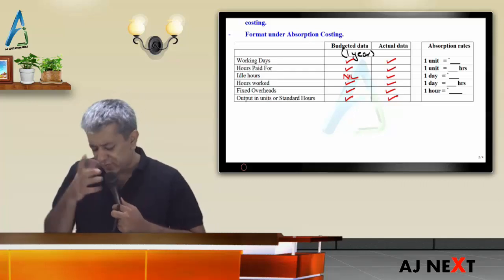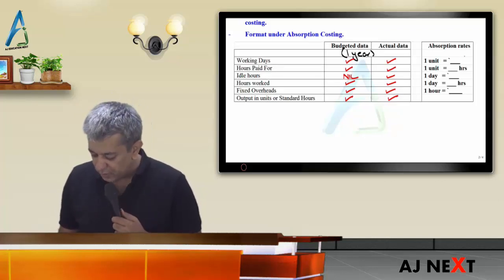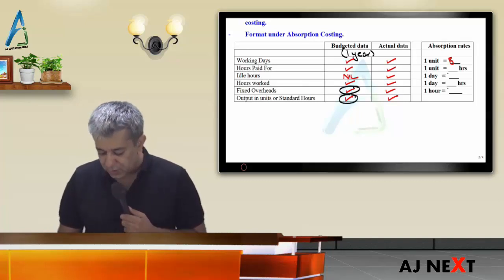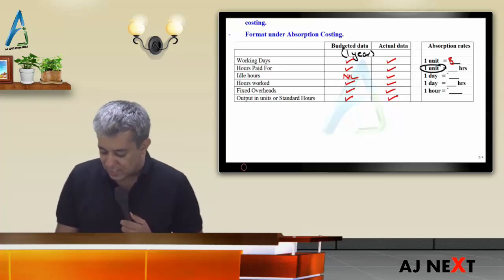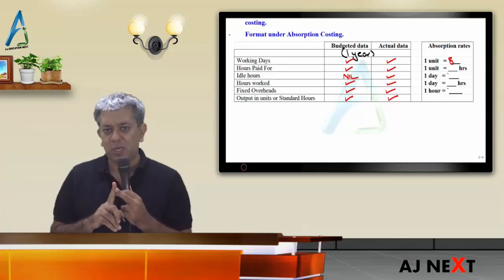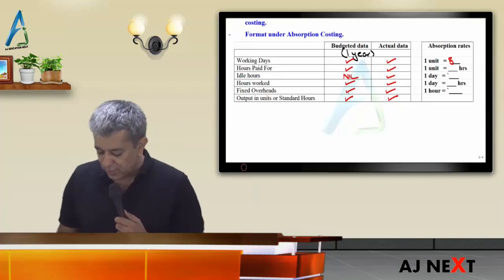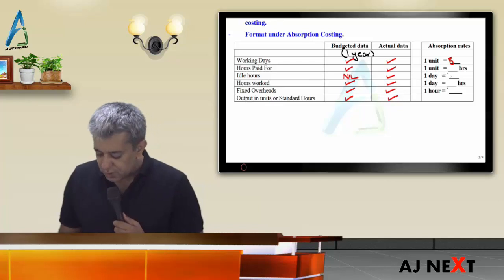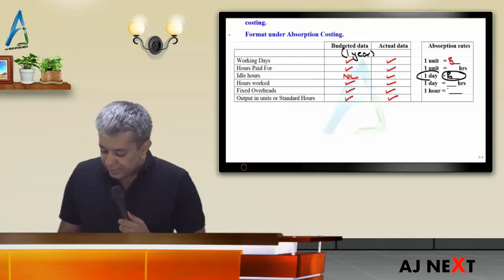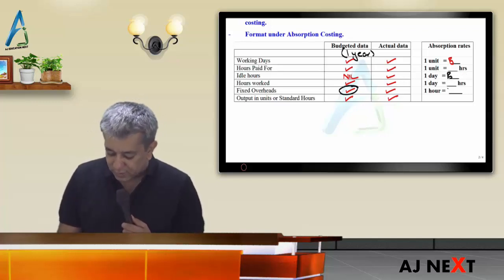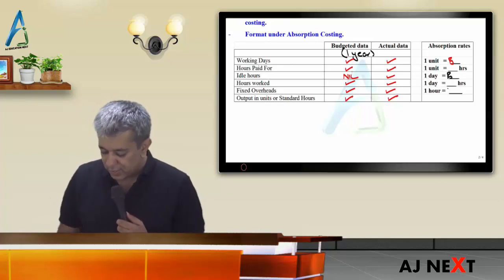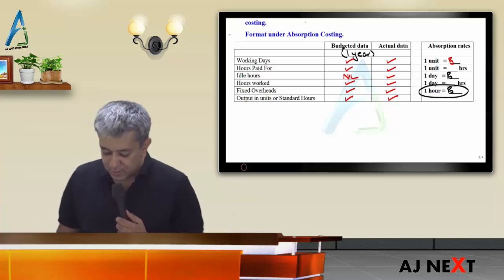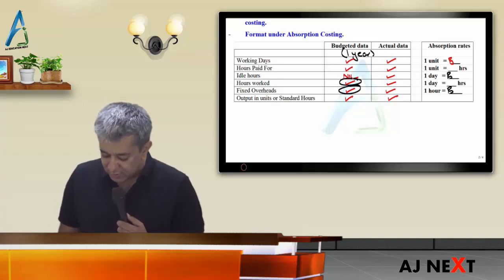You will need at most five absorption rates. One unit equals some rupees — that's rupees divided by units. One unit equals some hours — that's hours divided by units. One day equals some rupees — rupees divided by days. One day equals some hours — hours divided by days. One hour equals some rupees — rupees divided by hours. Remember, in standard data, hours paid for and hours worked are the same, because standard idle hours are always zero.